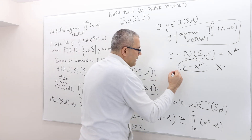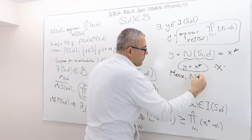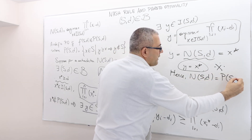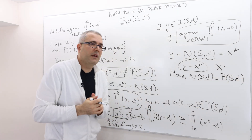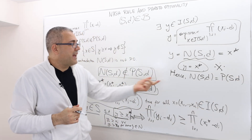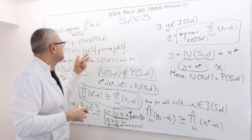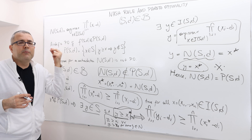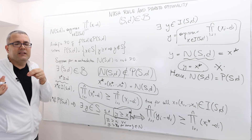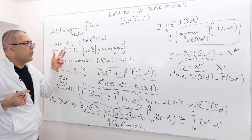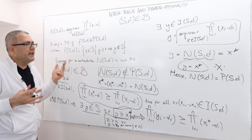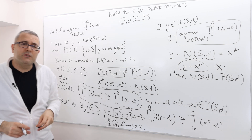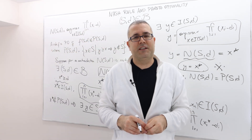We got a contradiction. This contradiction comes from the assumption that the Nash solution is not proto-optimal. Therefore, the Nash solution is an element of P(S,D), the set of proto-optimal allocations. This has to be true because we did not make any specific assumption about what S and the disagreement point D look like — all the arguments hold for any S and D. This is exactly how we prove that the Nash solution is in fact proto-optimal.